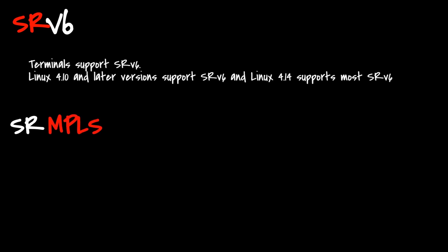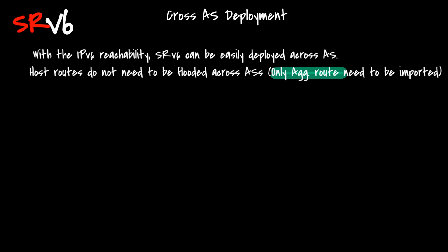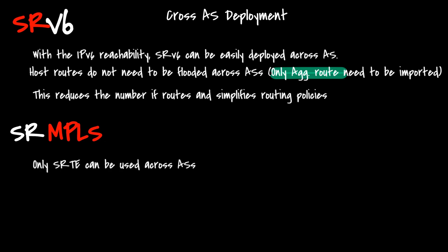In contrast, with SRMPLS it is difficult for DCN including virtual machines to support MPLS. With IPv6 reachability, SRv6 can easily deploy across autonomous systems. Host routes do not need to be flooded across autonomous systems — only aggregate routes need to be imported — which greatly reduces the number of routes and simplifies routing protocol policies. With MPLS, only SRMPLS-TE can be used across autonomous systems and requires an inter-AS controller. The local PE requires the loopback host route to the remote PE, and all loopback host routes of remote PEs need to be leaked. SRv6 can reduce the number of existing network protocols and simplify network programmability, better coping with the challenges of network deployments in the 5G and cloud era.